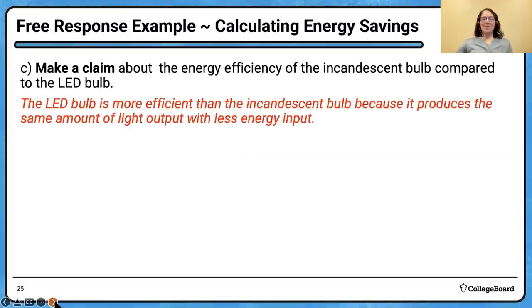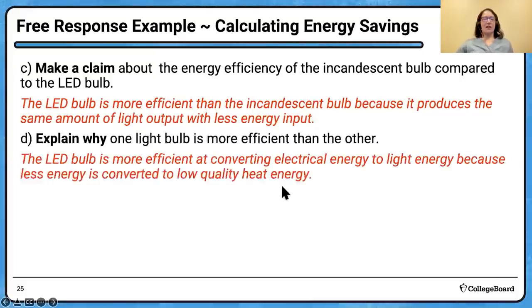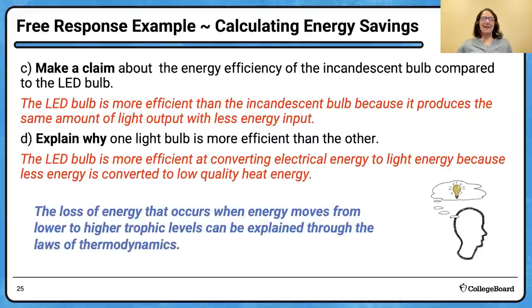Here's the rest of the FRQ, where we get some practice making a claim about energy efficiency. We only have one claim that we can make. Remember that that claim is based on evidence or data or knowledge. The LED bulb is more efficient, and it's more efficient because it produces the same light output using less energy. Explain why one light bulb is more efficient than other. The LED bulb is more efficient at converting electrical energy to light energy because less energy is converted into low quality heat. That should sound familiar to you if you think back to a previous unit where we talked about the loss of energy that occurs when we move from one trophic level to another. That 10% ecological efficiency, the second law of thermodynamics, that same law applies to this situation.